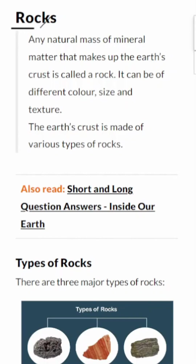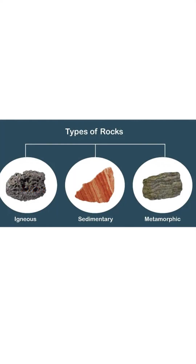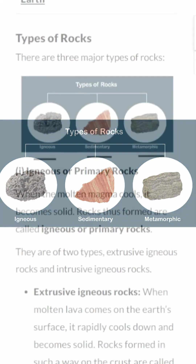Rocks are like the building blocks of our planet — natural masses of mineral matter that make up the Earth's crust. Imagine them as the sturdy bricks holding our world together. Rocks come in all sorts of colors, sizes, and textures. Some are smooth like polished marble, while others are rugged like the surface of the moon. The three major types of rocks that make up the Earth's crust are igneous rocks, sedimentary rocks, and metamorphic rocks.